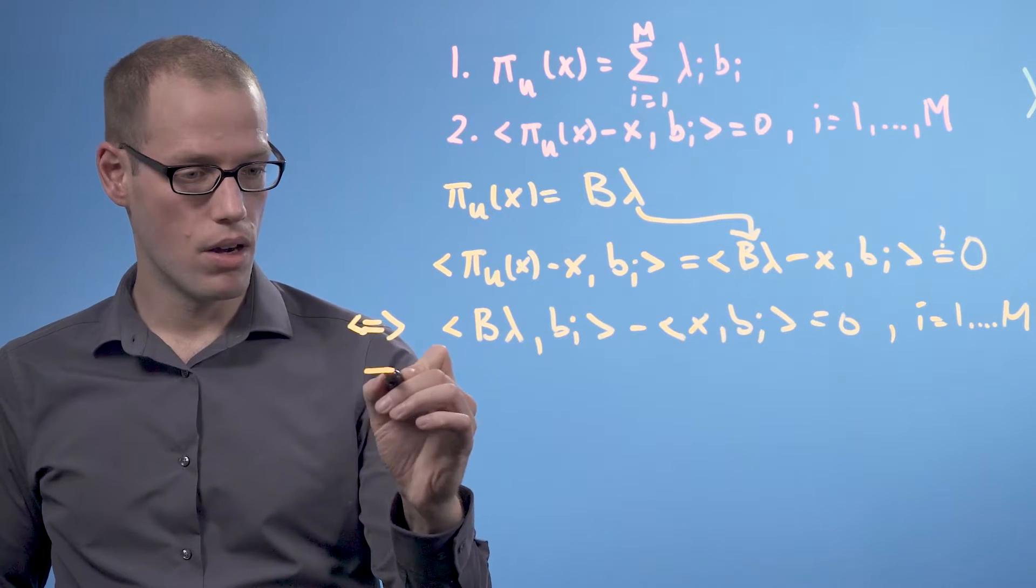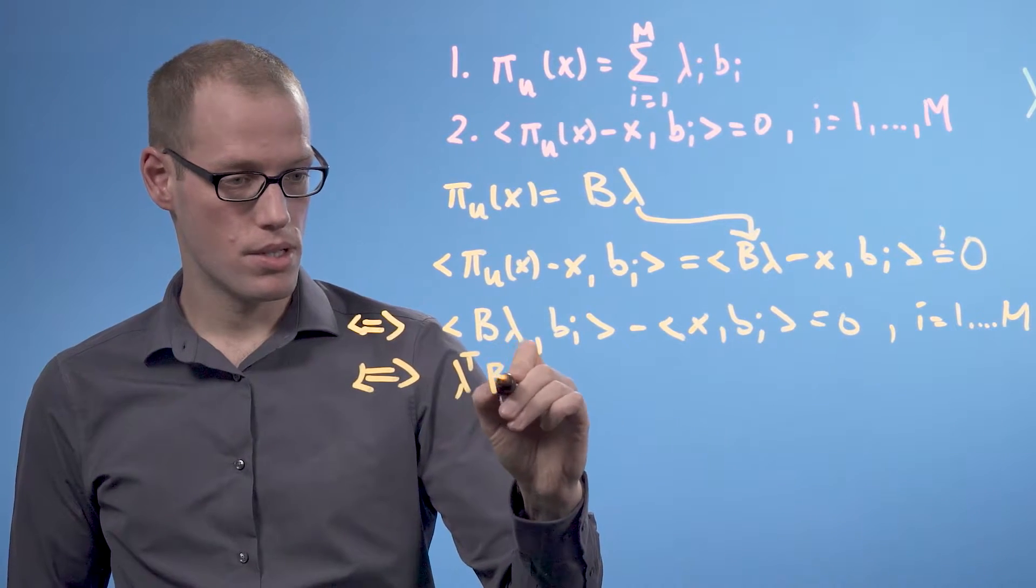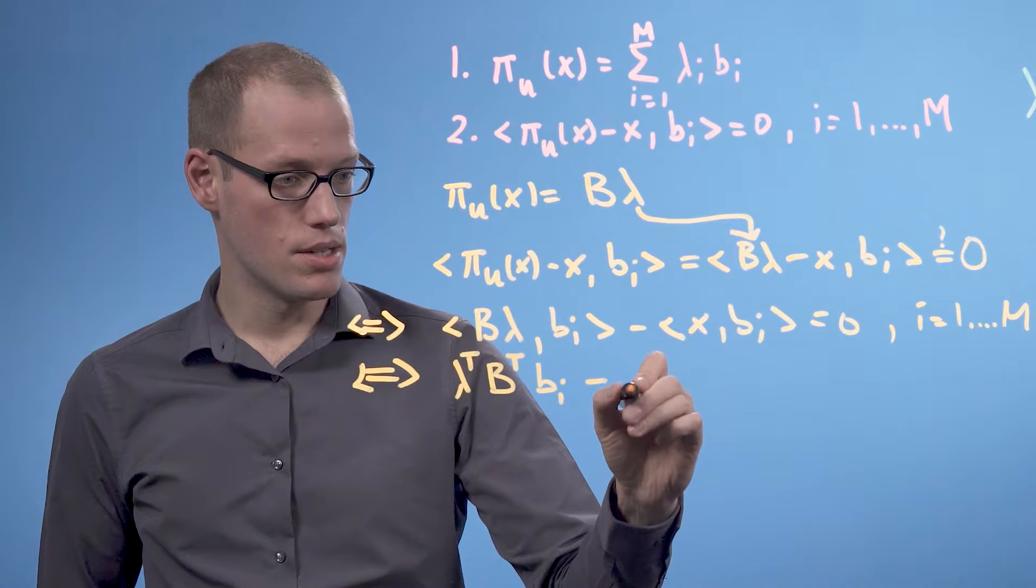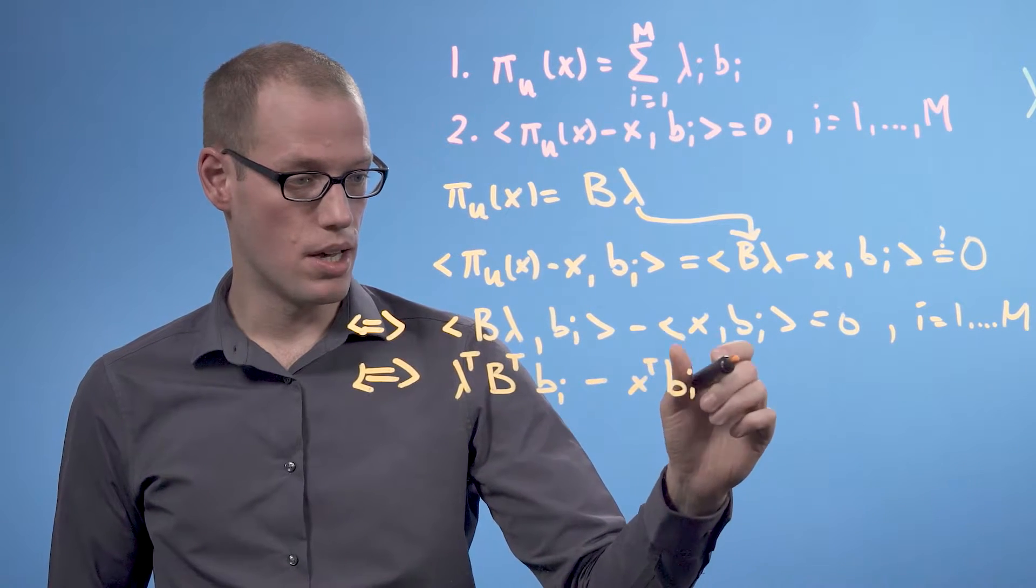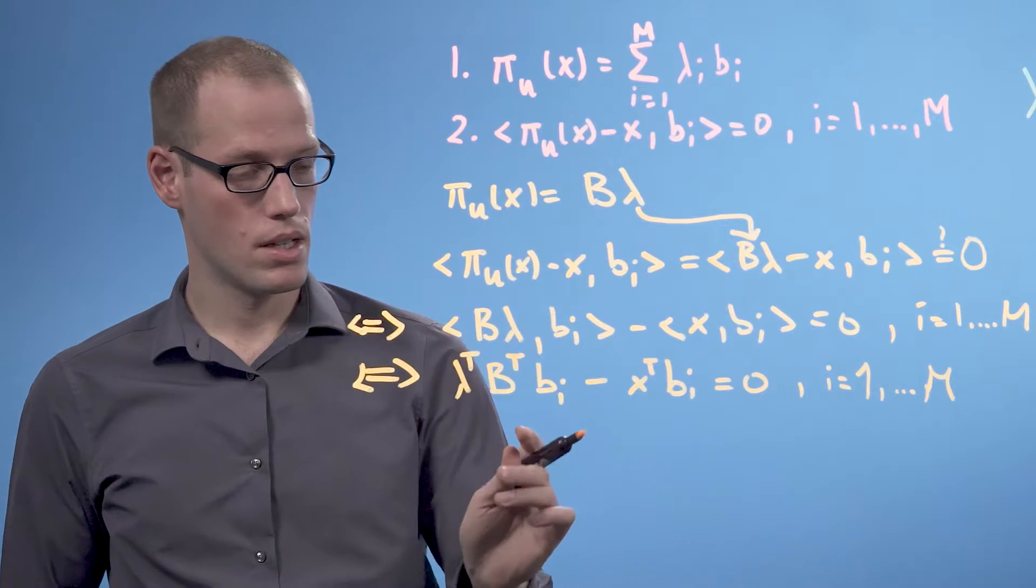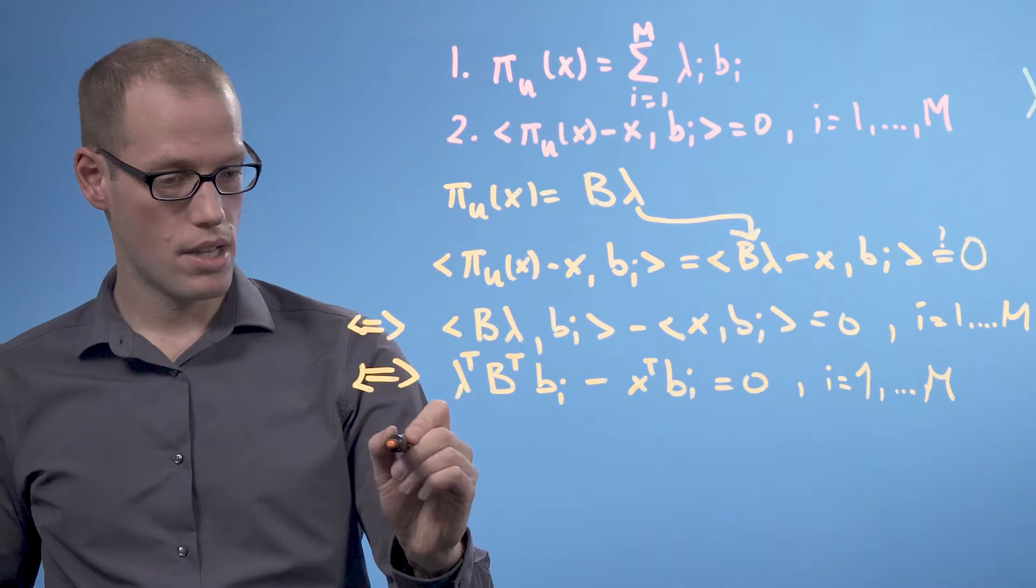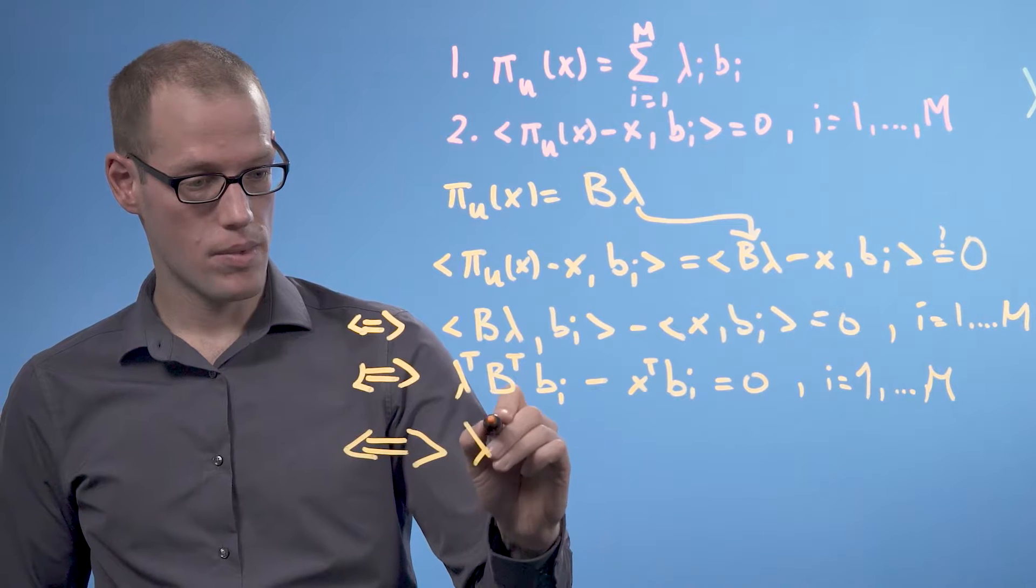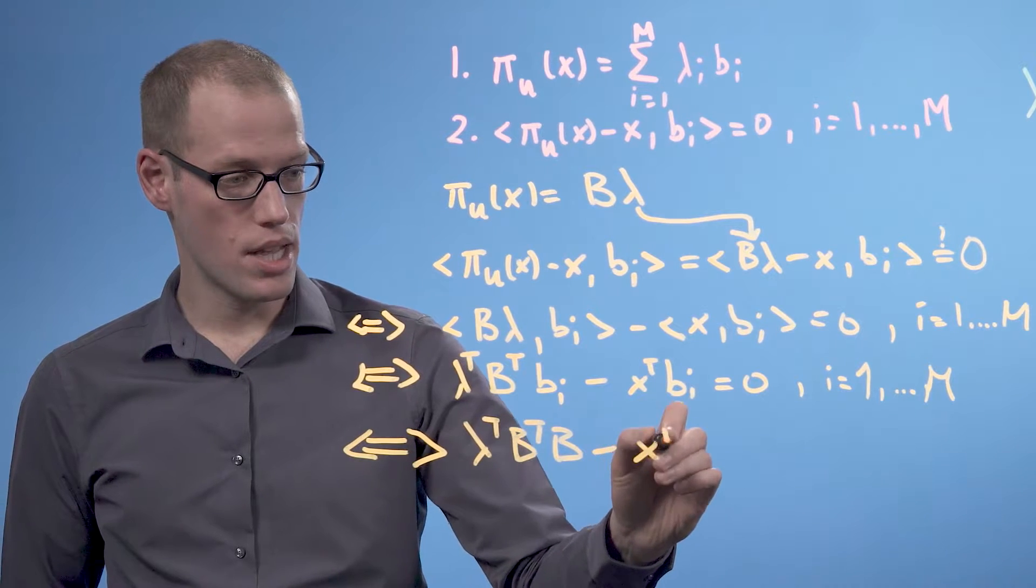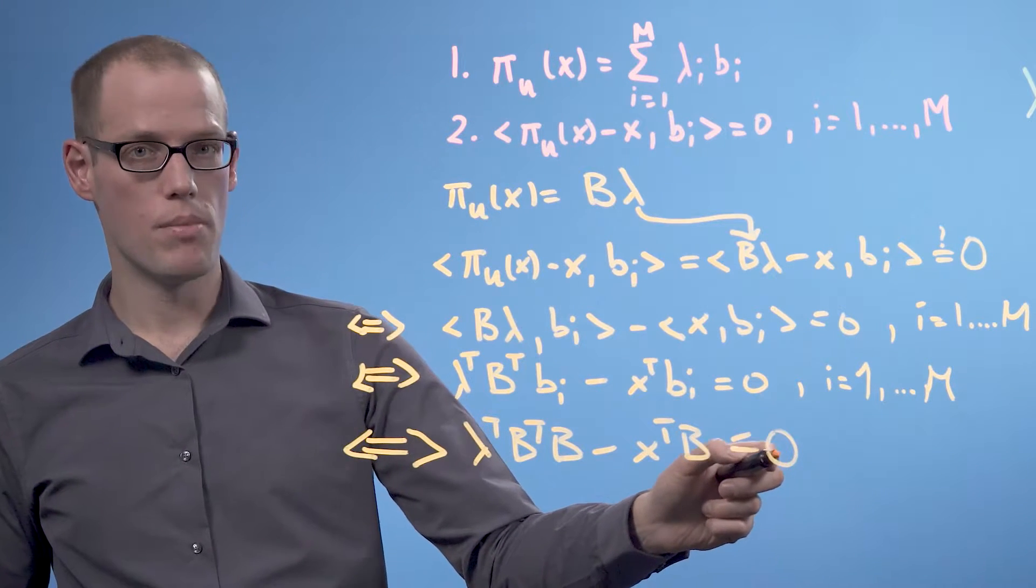With the inner product, we can now write this in the following way. We can write this as λ^T times B^T times b_i minus x^T times b_i equals 0 for i equals 1 to m. And now we can write this as a set of conditions. And if we summarize this, we would get λ^T times B^T times B minus x^T times B must be 0. Now we need to talk here about an m-dimensional 0.